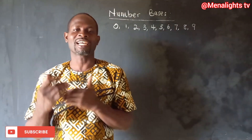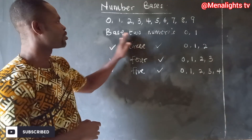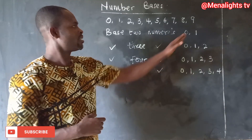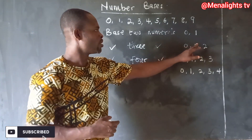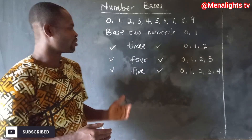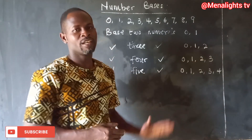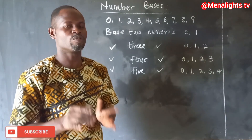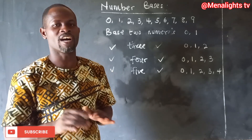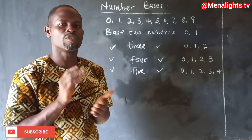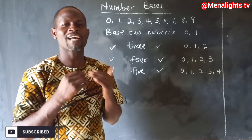Whenever you want other sets of numbers, you combine two or more digits. Base two numerals are zero and one. Base three is zero, one, two. Base four is zero, one, two, three. Base five is zero through four. Base six is zero through five. Base seven is zero through six.